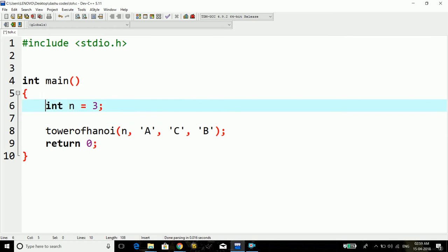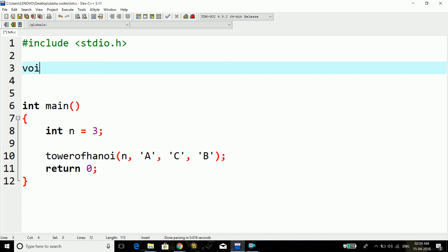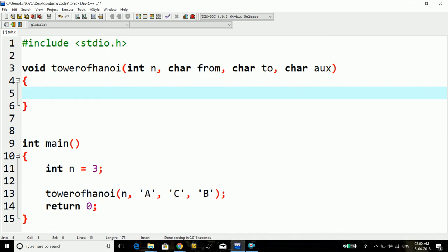We will be defining it now. The return type is void. I'll take these arguments: this will be character type, from; this will be character type, to; and this will be character type, auxiliary rod.